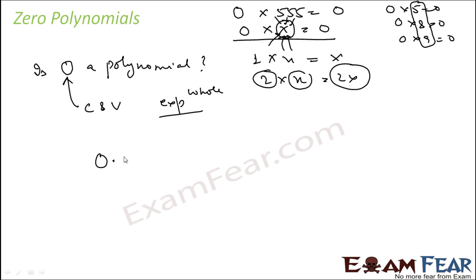Correct. Any constant is also a polynomial. 5 is also a polynomial. So 0 is also a polynomial. This is zero polynomial.